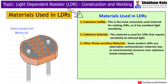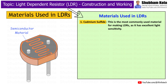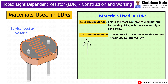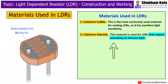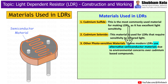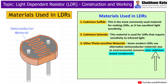Next, we will see the materials used in LDRs. First is Cadmium Sulphide, the most commonly used material for making LDRs, as it has excellent light sensitivity. Second is Cadmium Selenide, which is used for LDRs that require sensitivity to infrared light. Some modern LDRs use alternative semiconductor materials due to environmental concerns over Cadmium-based compounds.